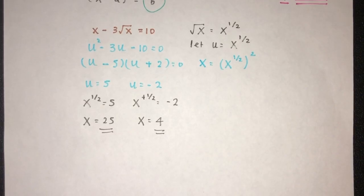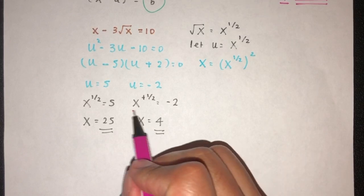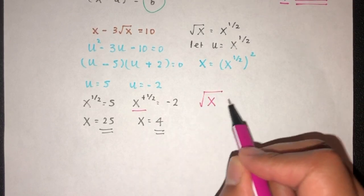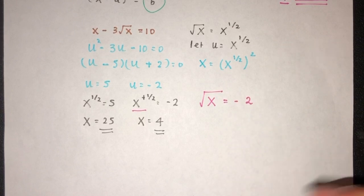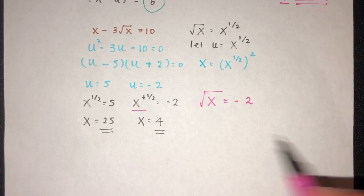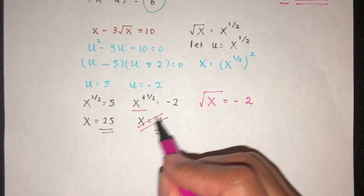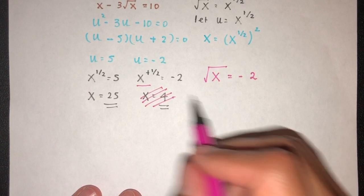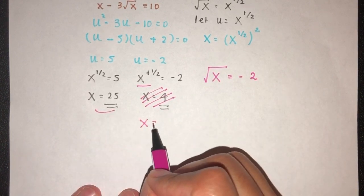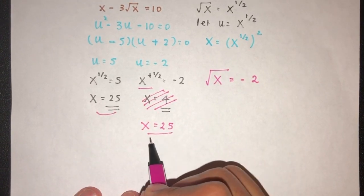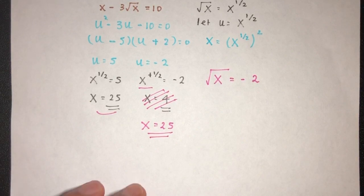Now before we wrap up this question, I did realize there's a mistake here as well. You can see this. x power half is root of x is equal to minus 2, which is simply not possible. Root of something cannot be minus 2, at least not here. So this answer will not be taken seriously. So we'll have only one value here, x equal to 25 will be the answer of the question. And that will be a question in relation to functions.